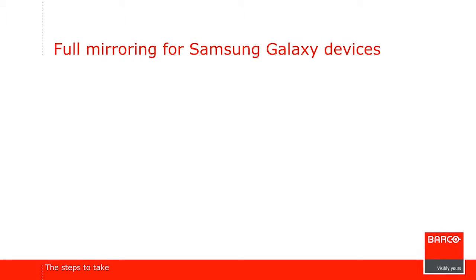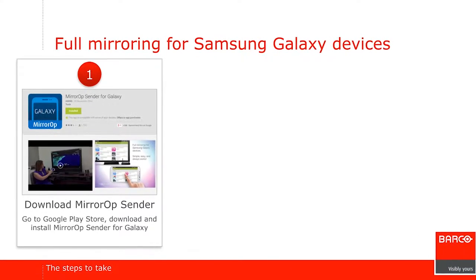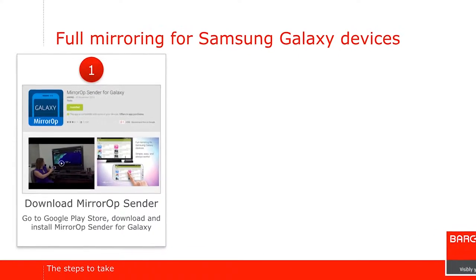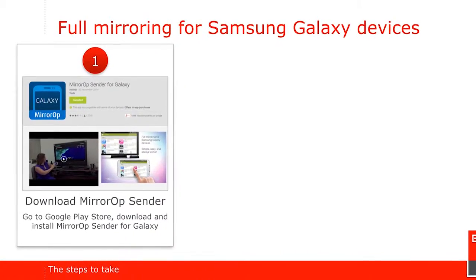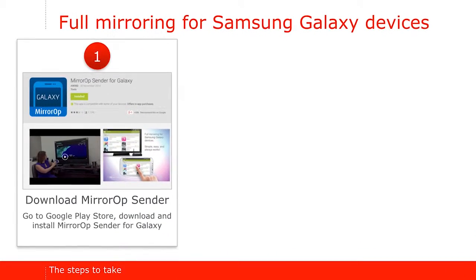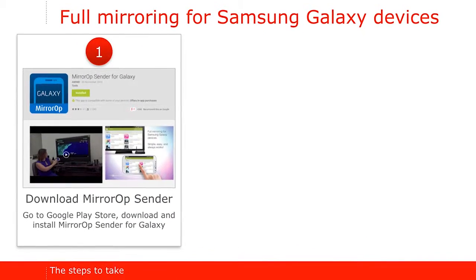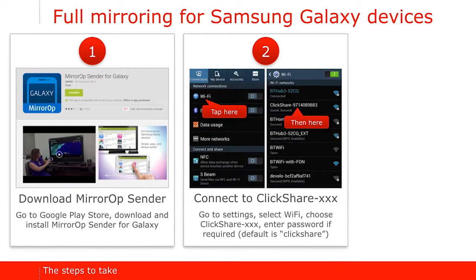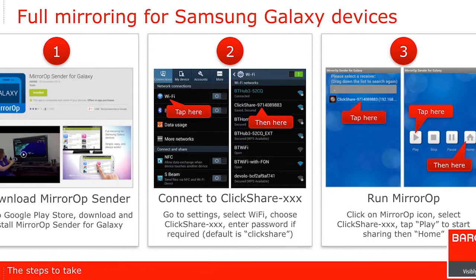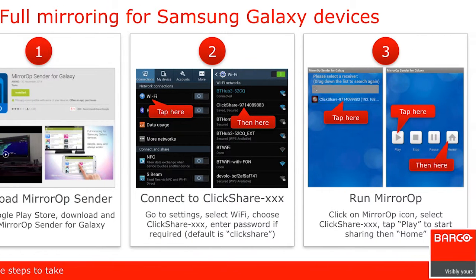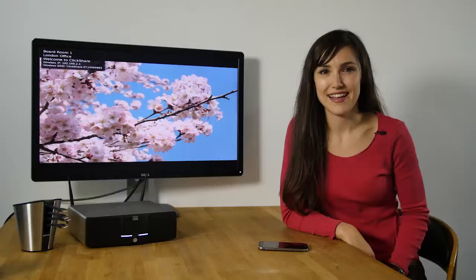There are three simple steps to take. Download MirrorOp Sender for Galaxy app from the Google Play Store. Connect to the ClickShare Wi-Fi network. Run the MirrorOp Sender for Galaxy app.